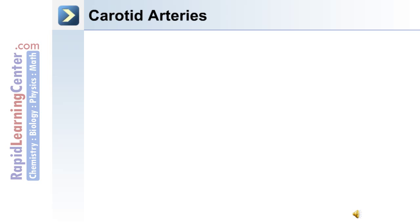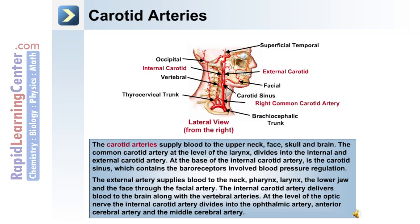Major arteries of the head and neck include the carotid arteries. These supply blood to the upper neck, face, skull, and the brain. The common carotid artery at the level of the larynx divides into the internal and external carotid artery. At the base of the internal carotid artery is the carotid sinus, which contains the baroreceptors involved in blood pressure regulation. The external artery supplies blood to the neck, pharynx, larynx, the lower jaw, and the face through the facial artery.